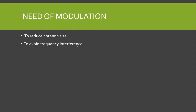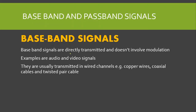The next reason for performing modulation is to avoid frequency interference. If several signals occupying the same frequency band are transmitted simultaneously over the same medium, they will all interfere and it will be impossible for the receiver to separate them. This is solved by modulation, where each station shifts its spectrum to an allotted frequency band not occupied by any other station. This method is called frequency division multiplexing, or FDM.